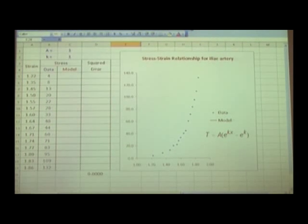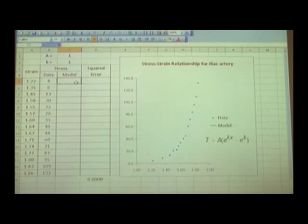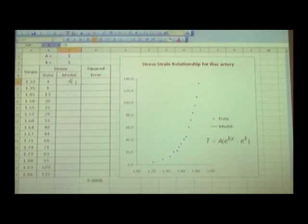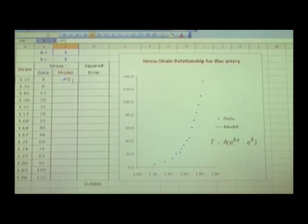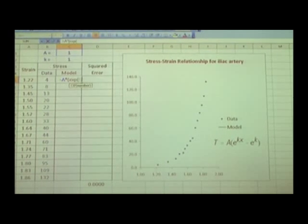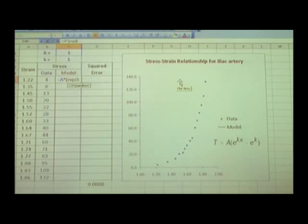My model is going to look something like this. So what I'm going to do is to write down the formula equals a times exponential k times x. x is this value here, minus exponential k. So this is my model if a and k pick those values.